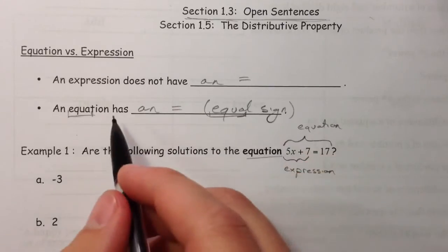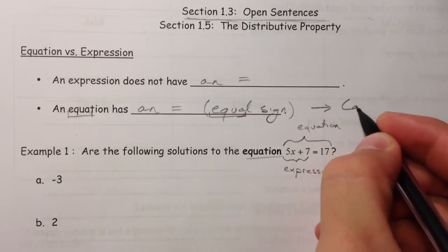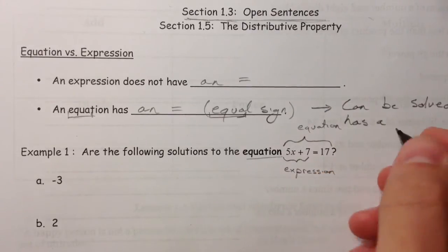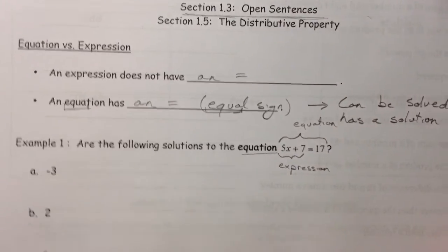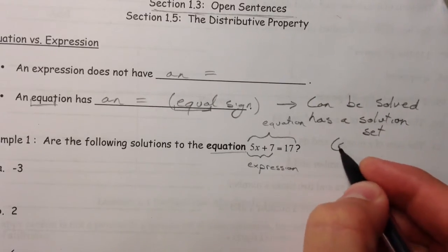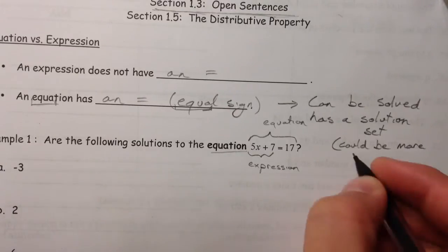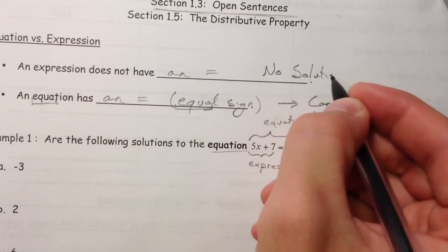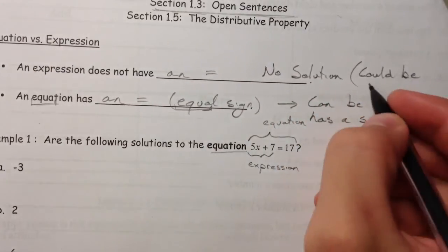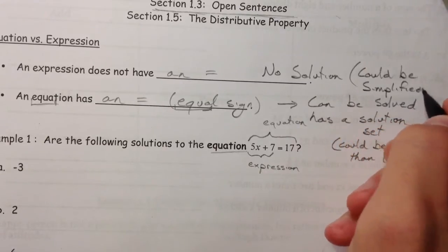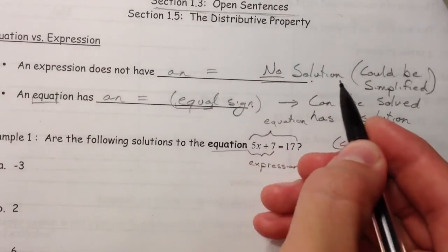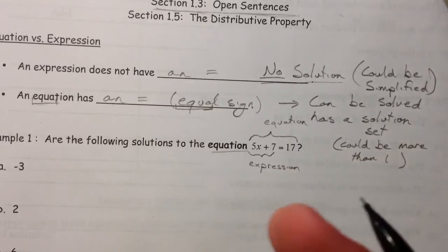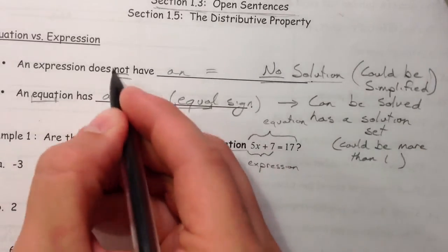So why is this important? Well, an equation can be solved, or you could say has a solution, or we're going to say solution or solution set, meaning could be more than one. Where an expression, no solution. Maybe it could be simplified. So there you have it. Expression can't be solved. No solution. But an equation can be solved. And I don't mean no solution like there's absolutely no number that will make it true. I mean it cannot be solved. There's no point in solving it because there is not an equal sign.